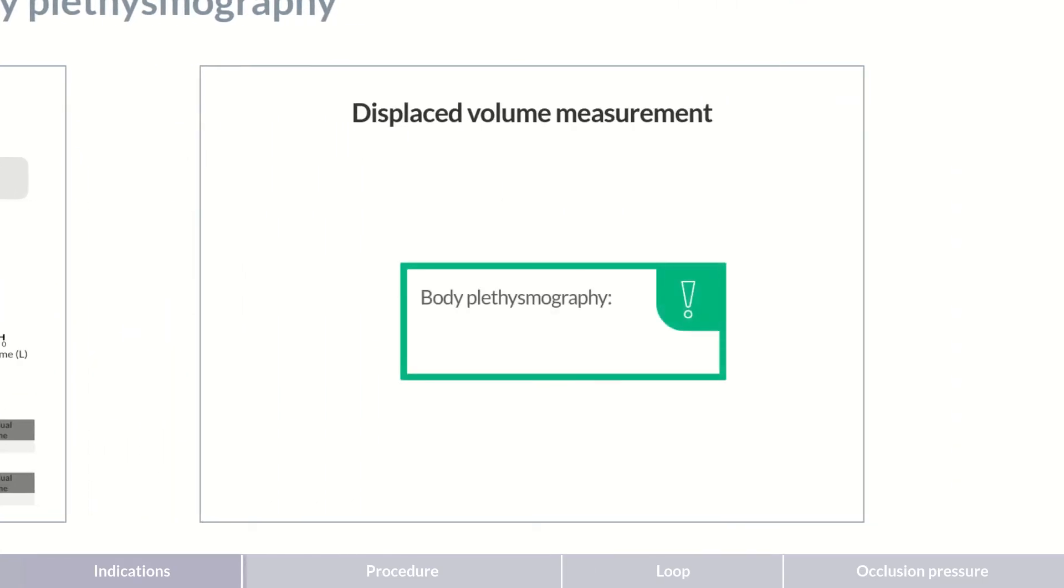The term body plethysmography is derived from the Greek word plethysmos, meaning enlargement, and graphene, for to write. It literally means describing the enlargement of a body.